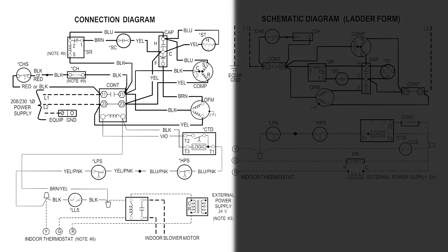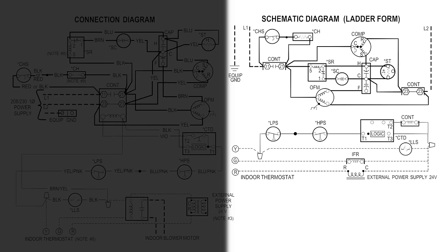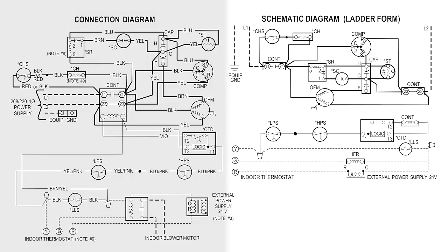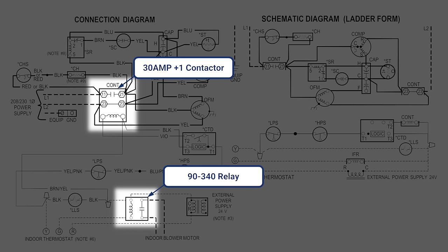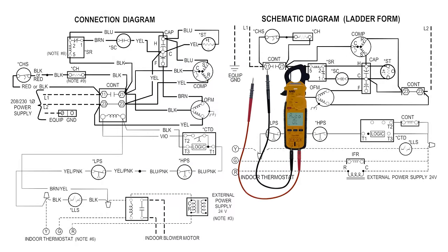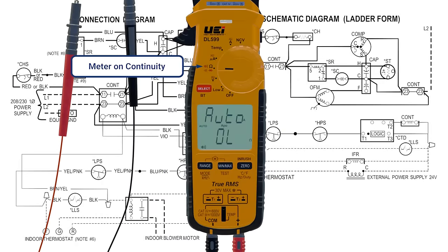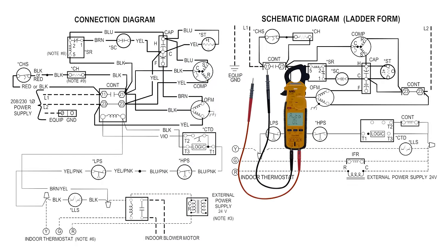On the left, you see a connection diagram, or point-to-point diagram, and on the right, you show a ladder schematic, or schematic diagram in the ladder form. Here, we're going to show the contactor that's used for the compressor and condenser fan, as well as the blower relay, tested with an ohmmeter, showing the contacts opening and closing when energized or de-energized.